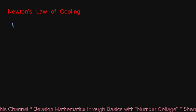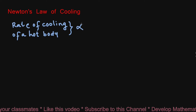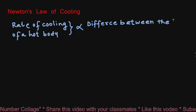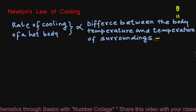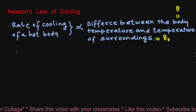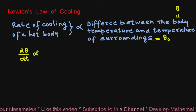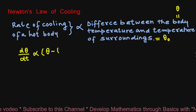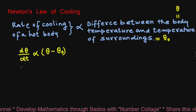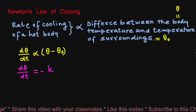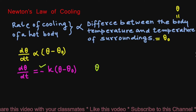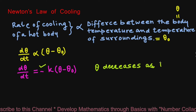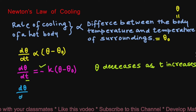In this video, we will discuss Newton's Law of Cooling. According to this law, the rate of cooling of a hot body is directly proportional to the difference between the body temperature and the temperature of the surroundings. If the body temperature is θ and temperature of the surroundings is θ₀, then the rate of cooling dθ/dt is directly proportional to θ minus θ₀. That gives us dθ/dt = −k(θ − θ₀). There is a negative sign because body temperature decreases as time t increases, so dθ/dt is negative.